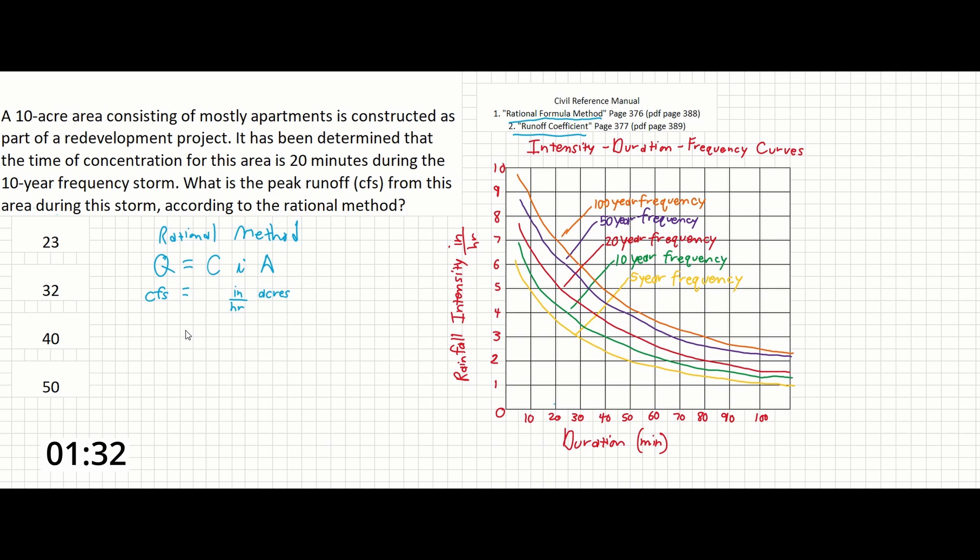So from there, these are the terms we need to find in order to solve for the peak runoff. Our first term is our area in this case, and that's given right in the problem. So A equals 10 acres.